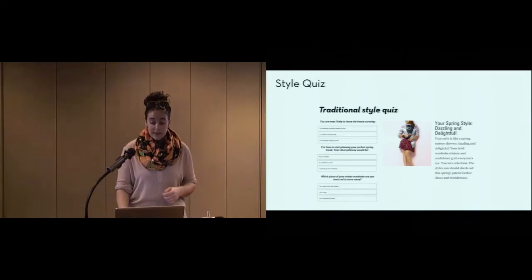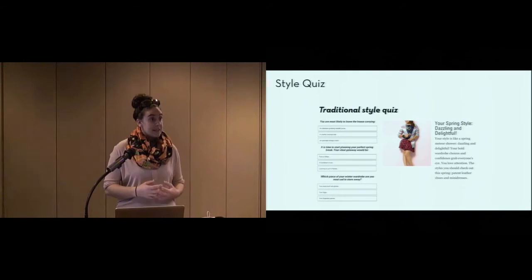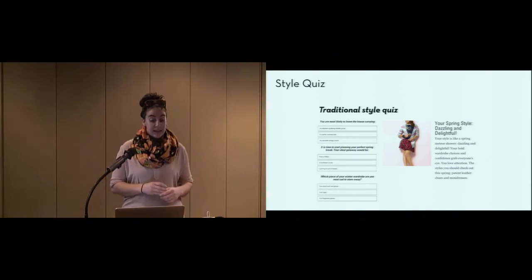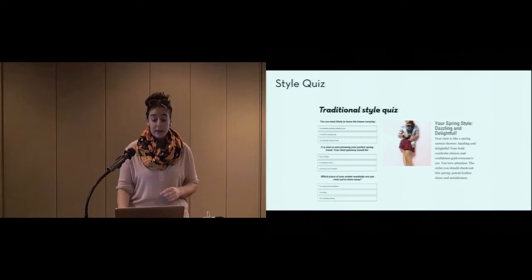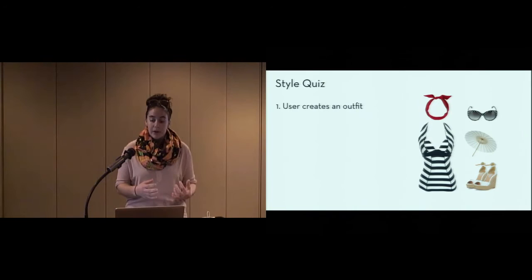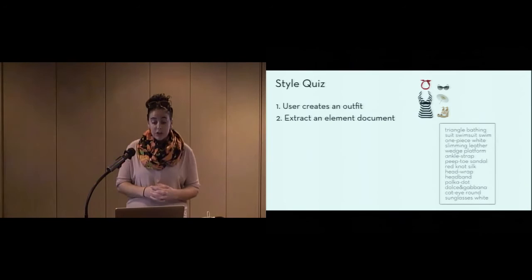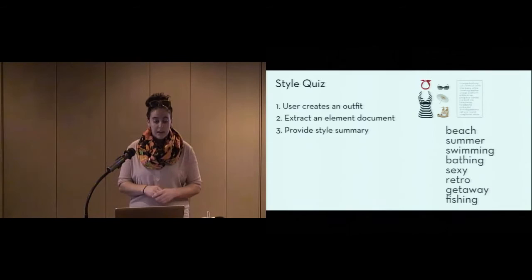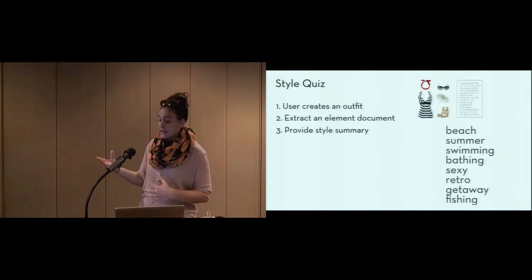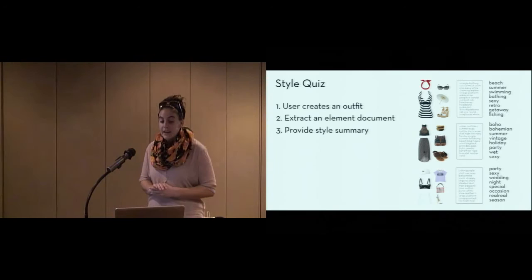We can also build fashion applications that map onto existing needs. Our second application is based on a common site in fashion magazines, style quizzes, where a user answers a series of questions and is given their own style summary. Our model can power a style quiz that takes in much more natural input that can be updated quickly and easily with new trends. The user simply creates an outfit that they like or that they think captures their style. Since we have element descriptions of each item, we can extract an element document, translate through the topic representation, and provide a style summary to the user. So, for example, finding this summary outfit is a sexy retro beach outfit. And similarly, for any other input, with an additional measure of how confident the model is in those style labels.